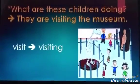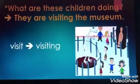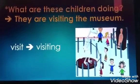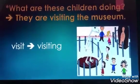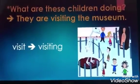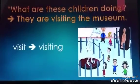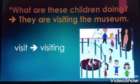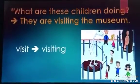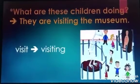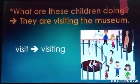Look at these children. What are they doing? They are visiting the museum. Look at the verb 'visit' — it ends in CVC too: 's' is consonant, 'i' is vowel, 't' is consonant. But I should never double the last letter in 'visit'. So there are some special verbs — I never ever double the last letter in them.